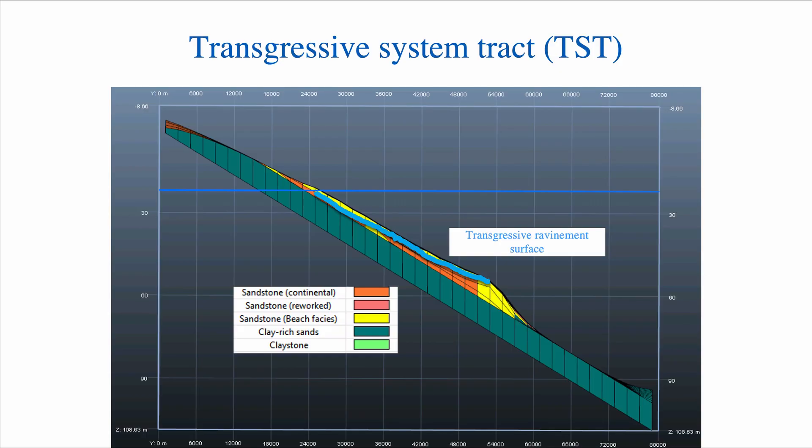What surface caps the TST? The surface is known as the transgressive ravinement surface, which I show here in light blue. It's characteristic of the TST and it's created by a lot of erosion due to scouring.